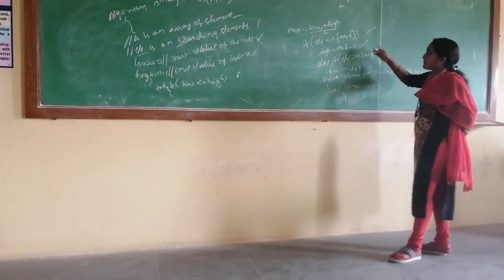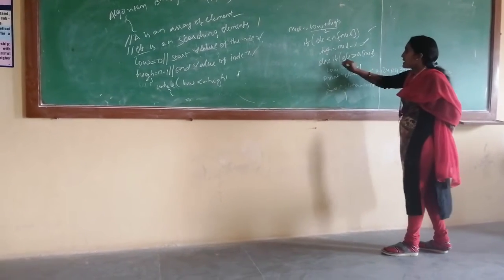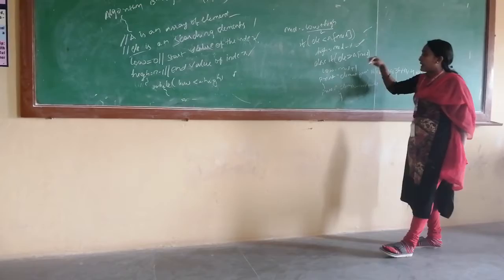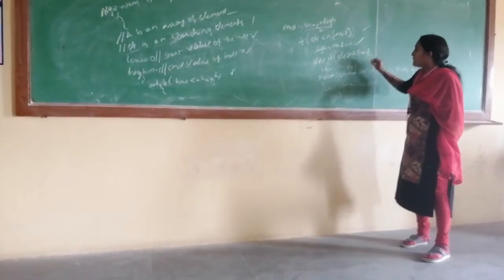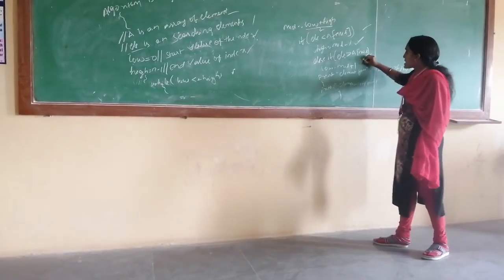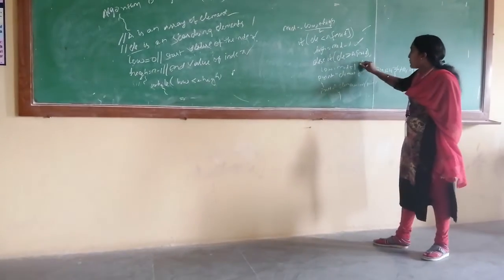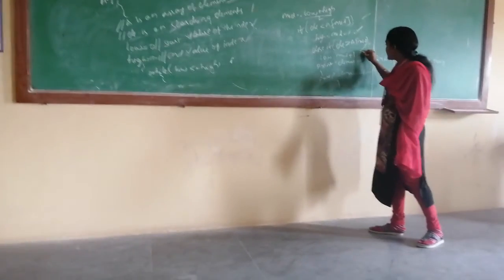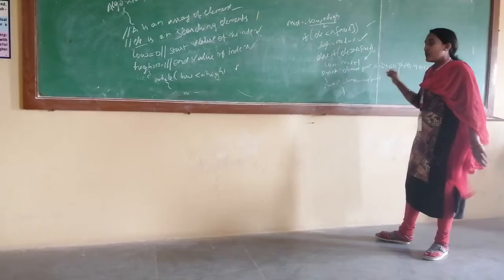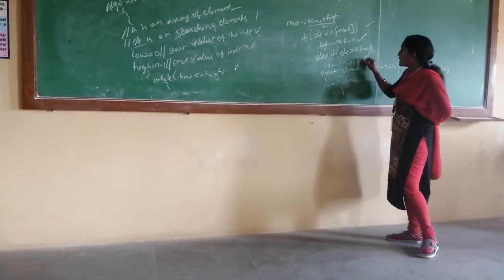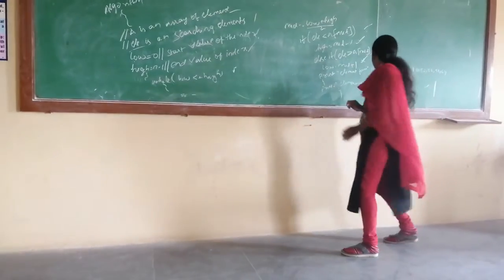And next, if the searching element is greater than the middle value, we will set low equal to mid plus 1. If it satisfies — if the element is found — the task is completed. And if it does not satisfy, then the element is not found.